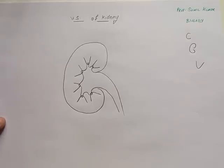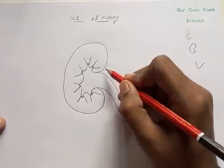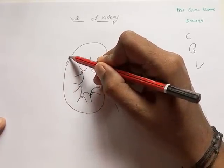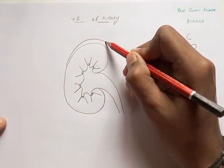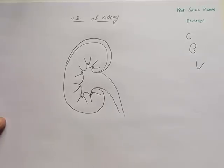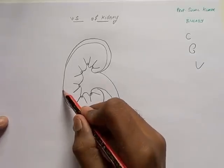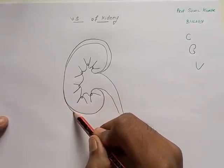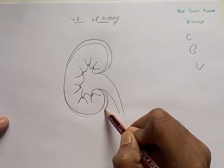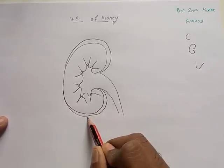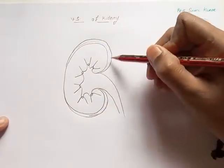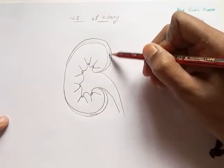Connect all the renal pyramids like this in a very simple way so that it's easy to understand. What comes out is basically the ureter. Once we have done this, give a covering on the kidney. This covering is called the capsule — also known as the renal capsule.